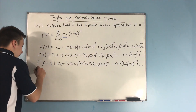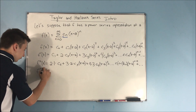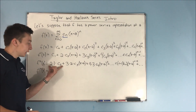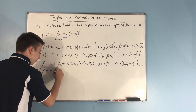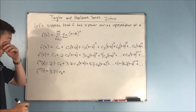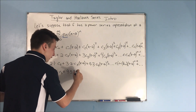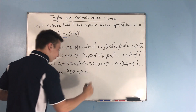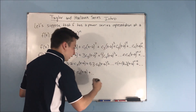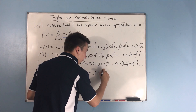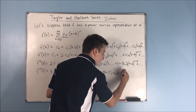Let's take a third derivative, just to help us really see this pattern — this third derivative is really going to hit it home. Now we take our third derivative: this 2 times 1 term is a constant, so it goes to zero. Here we have 3 times 2 times 1 times c sub 3. Our next term is 4 times 3 times 2 times c sub 4 times x minus a. And we end up with n times n minus 1 times n minus 2 times c sub n times x minus a to the n minus 3.